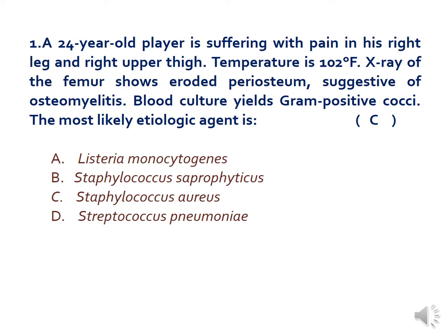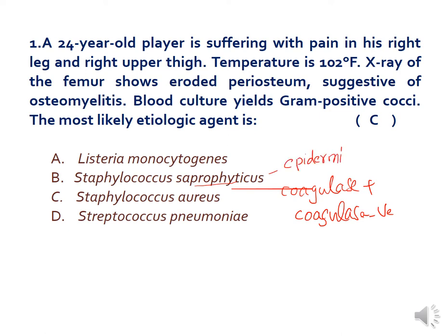Looking at Staphylococcus, the three important species are: one is coagulase-positive Staphylococcus, and the others are coagulase-negative Staphylococcus. In the coagulase-negative group, we have two: one is Saprophyticus and number two is Epidermidis. These are the other species of Staphylococcus and are normal flora of human skin, respiratory tract, and also the GIT tract.